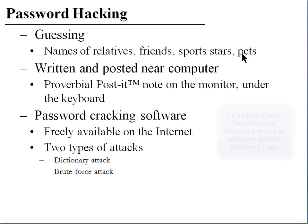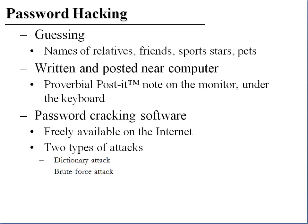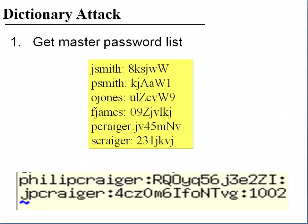The first attack type is a dictionary attack: you take software to hash all the words in a dictionary, then compare those hashed entries against the hashes in the password shadow file or SAM file. If it matches, that's the password. If that doesn't work, there's a brute force attack, where the password cracker tries every conceivable combination of letters — uppercase, lowercase, special characters, and numbers — hashes those, and then compares those against the shadow file or SAM file entries.